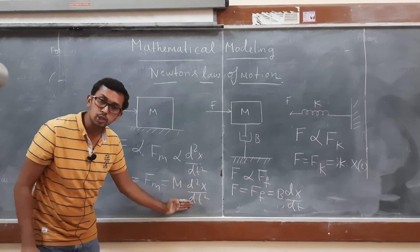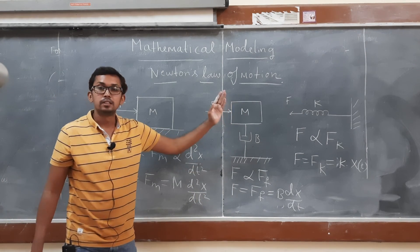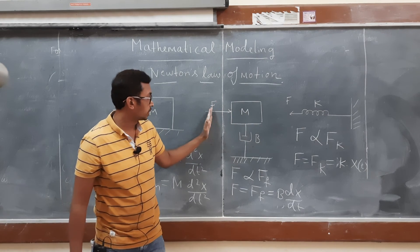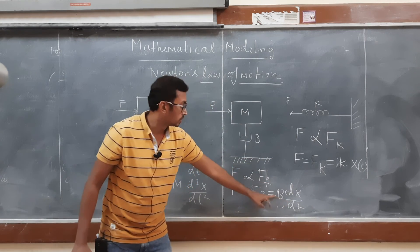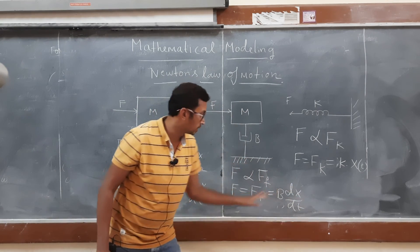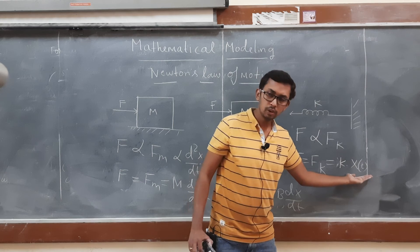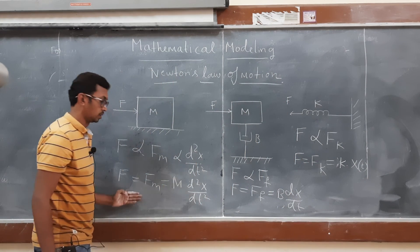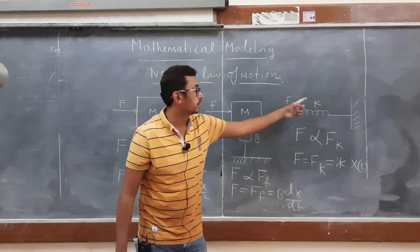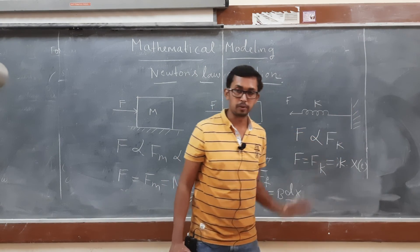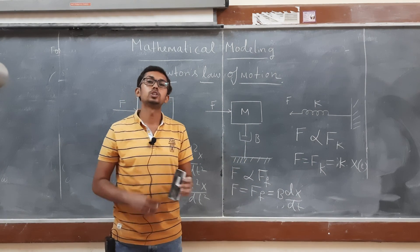To summarize: mass is proportional to acceleration, written as m · d²x/dt². In the case of a damper, the friction force is proportional to velocity, written as B · dx/dt. In the case of a spring, the spring force is proportional to displacement. You need to remember this: mass → acceleration, damper → velocity, spring → displacement. Only then will you be able to solve the problems.